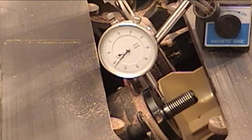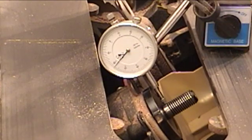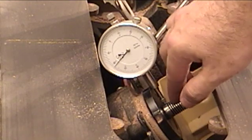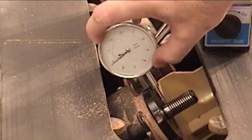Now I like to use a dial indicator which is attached to a magnetic base in order to check for the run out. What you want to do is put the plunger on the back portion of the arbor where there are no threads and adjust the dial indicator to zero.